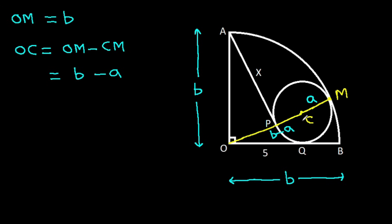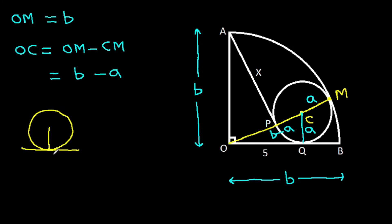And if we join CQ, then CQ will be A, since it is a radius of the inner circle. And in any circle, the radius and tangent are perpendicular to each other. So CQ will be perpendicular to OB.